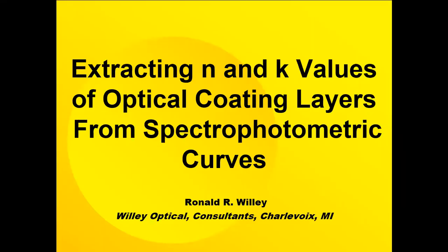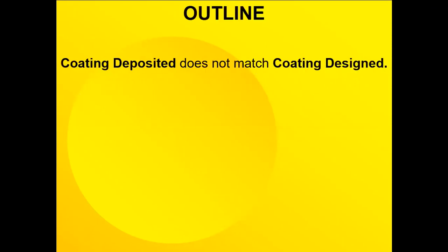My subject in this paper is extracting the N and K values of optical coating layers from spectrophotometric curves. What's the problem? The problem is coatings deposited do not necessarily match the coatings designs. Generally the problem is the index of refraction is not correct, so we need to characterize these values.